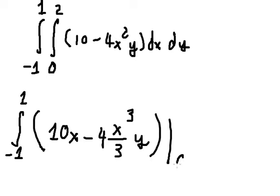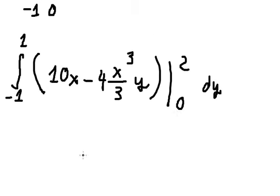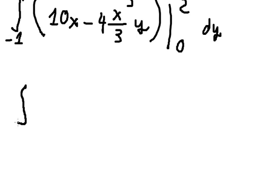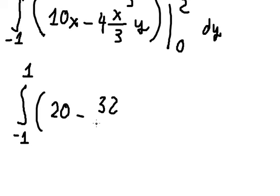We put the bounds from 0 to 2, so I will put 2 here, 0 here. This one, that is about 20 minus 32 over 3.